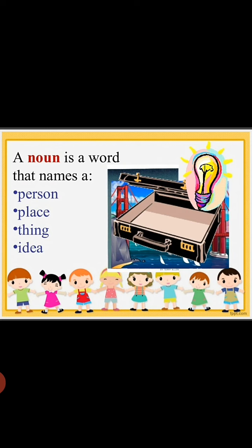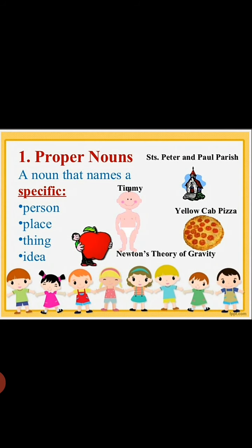The first category is proper noun. A proper noun is the name of a specific person, place, thing, or idea. They describe something specific — like Peter and Paul, Paris, that is a specific place, and apple is also a specific fruit among all other fruits.